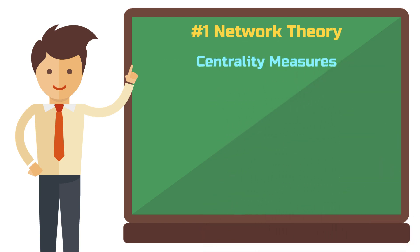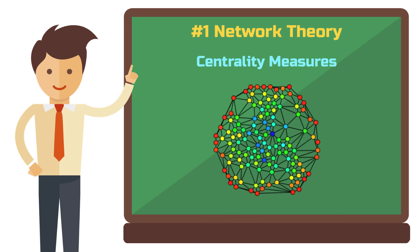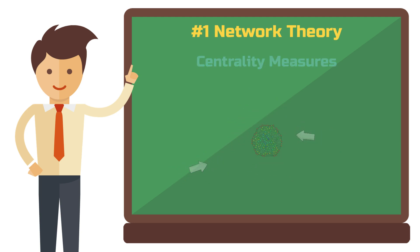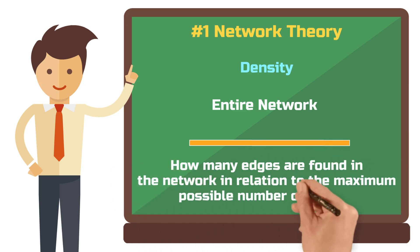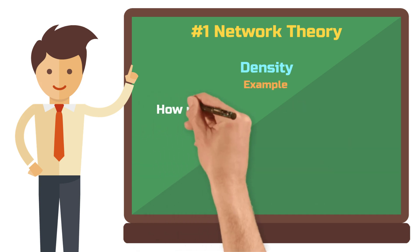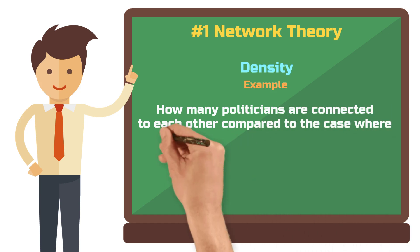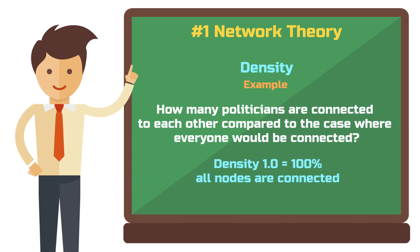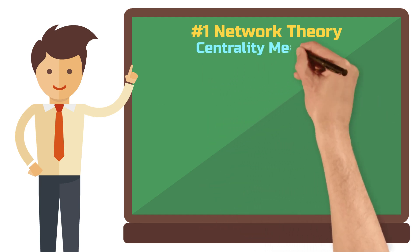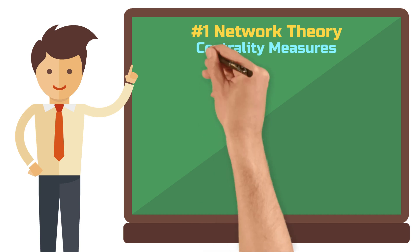When facing a larger network, you might want to know certain properties of individual nodes or determine which nodes are particularly important or play a specific role in the network. For this, you can calculate various centrality measures. But before we come to those, there's one more measure I want to show you and this is density. The density measure helps you to describe a characteristic of the entire network — it indicates how many edges there are in the network relative to the maximum possible number of edges. For example, it shows how many users in our group of politicians are connected with each other compared to a scenario where everyone is connected with everyone. If all nodes are connected, the density is 1 or 100%. So you always get a value between 0 and 1 for density.